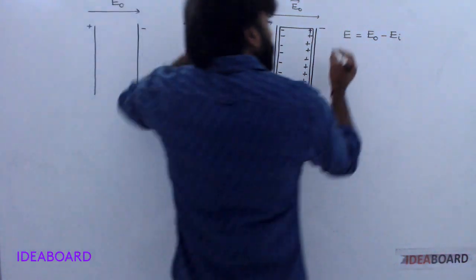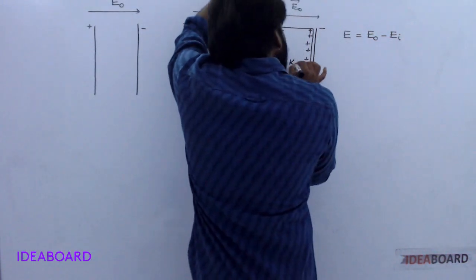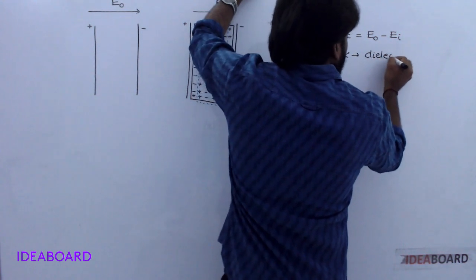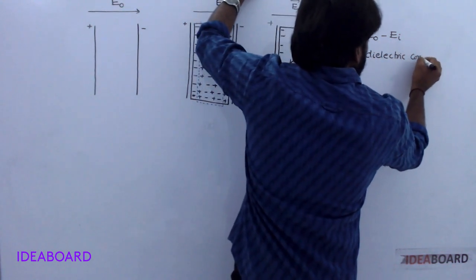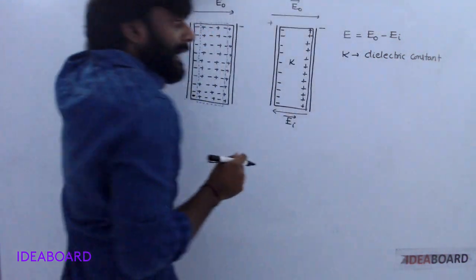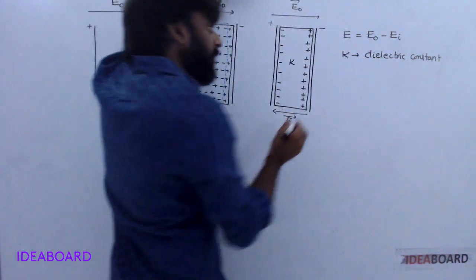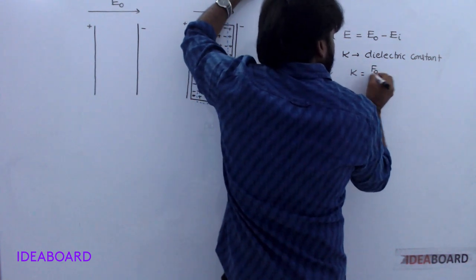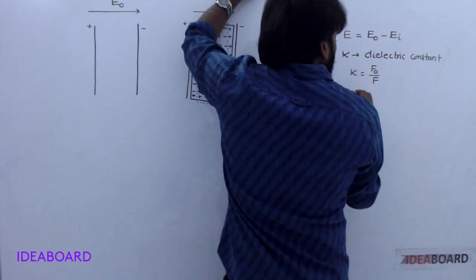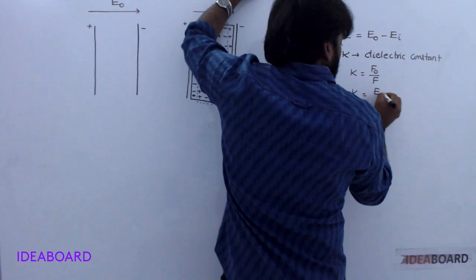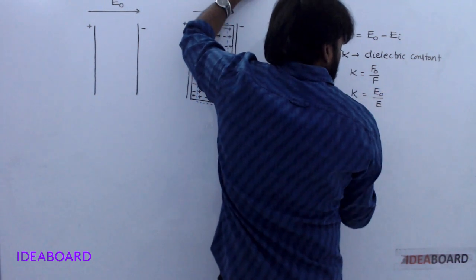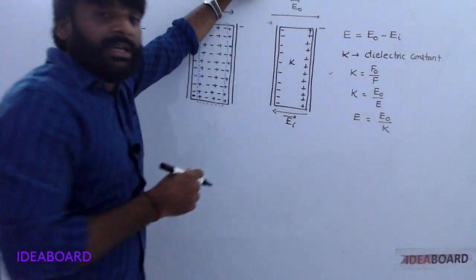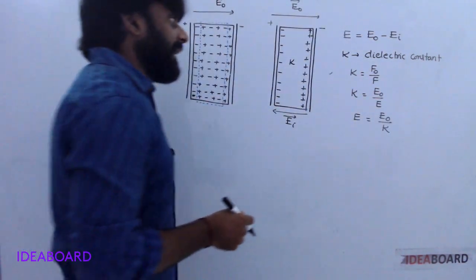Both the applied and induced fields are in opposite direction. K is the dielectric constant. In Gauss law, K equals F₀/F and K equals E₀/E. So from this, E equals E₀/K.